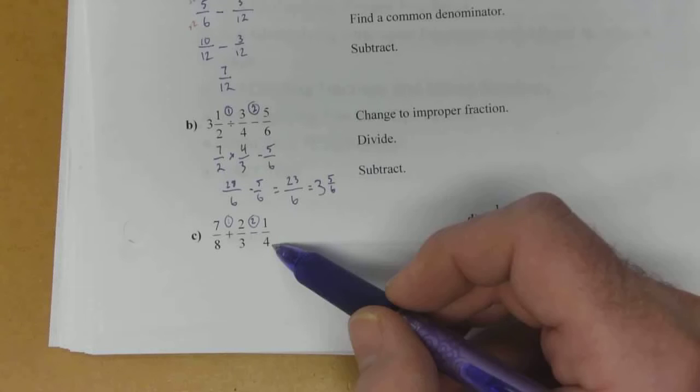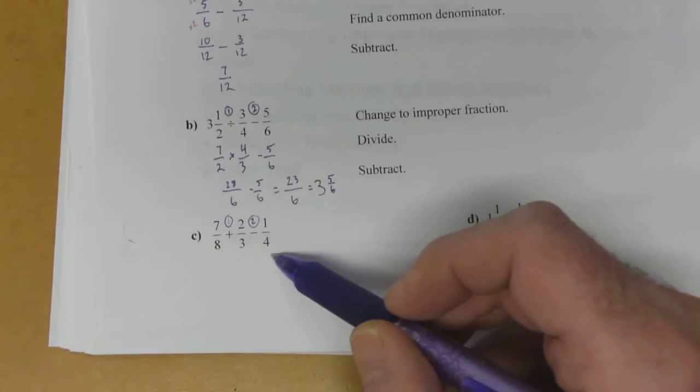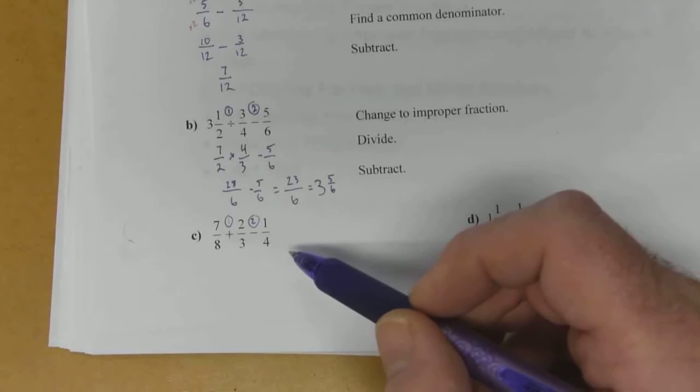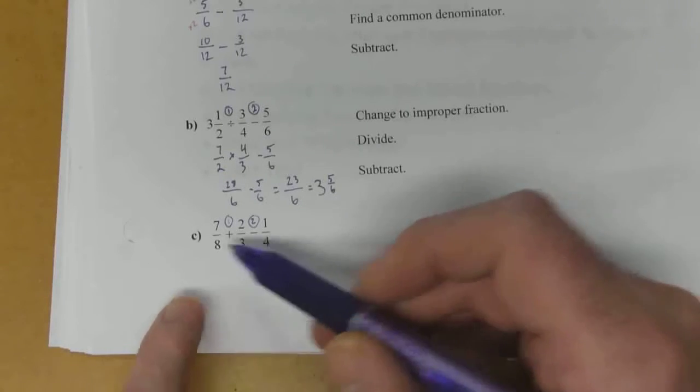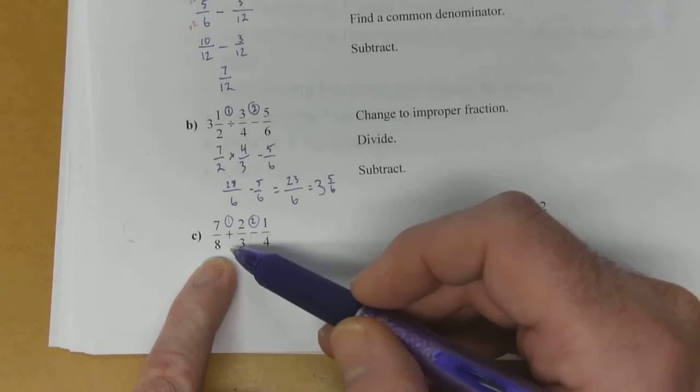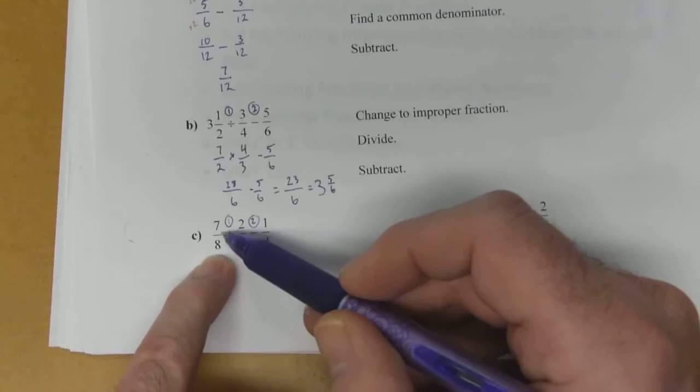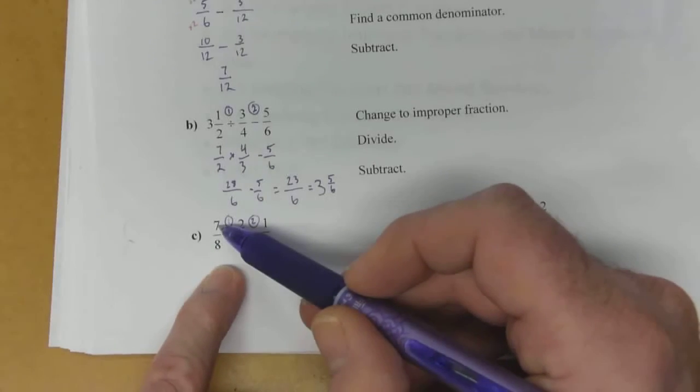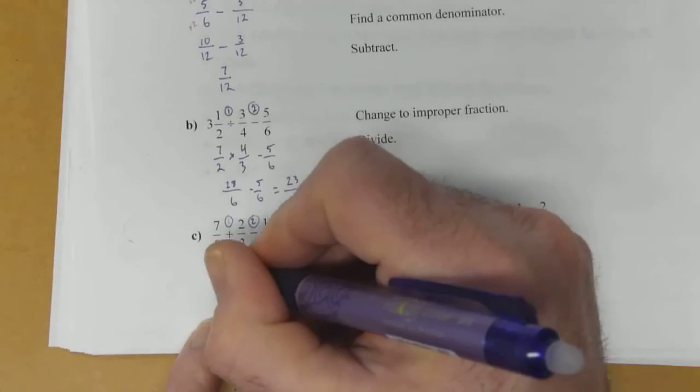So I'm just going to change them all right now so that they have a common denominator of 24. All at once. So 8 times 3 will give you 24. So if you're multiplying the bottom by 3, you have to multiply the top by 3. 7 times 3 is 21.